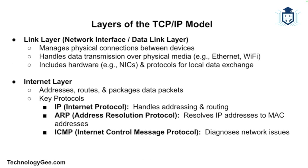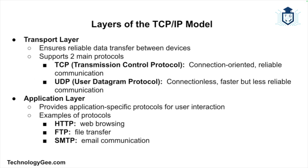The TCP/IP model comprises four layers, each corresponding to specific functions in the communication process. The first is the link layer, also known as the network interface or data link layer — this handles the physical connection between devices and includes protocols and hardware necessary for transmitting data over physical media such as Ethernet or Wi-Fi. The second is the internet layer, which is responsible for addressing, routing, and packaging data packets; key components include IP, ARP, and ICMP.